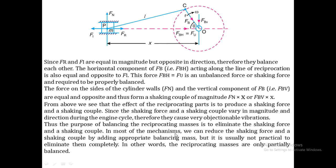In most mechanisms we can reduce the shaking force and shaking couple by adding an approximate balancing mass — similar to balancing of rotary masses — but it is usually not practical to eliminate them completely. In other words, reciprocating masses can only be partially balanced. We are unable to fully eliminate the unbalanced force, shaking force, and shaking couple; we can only minimize their effect.